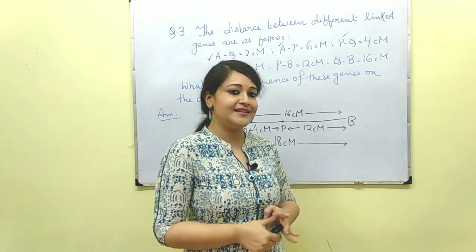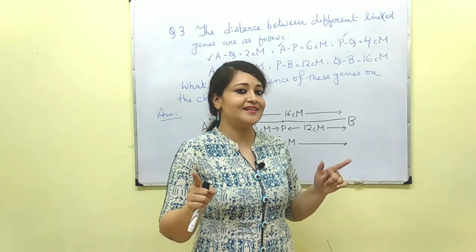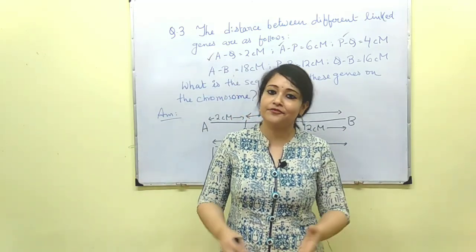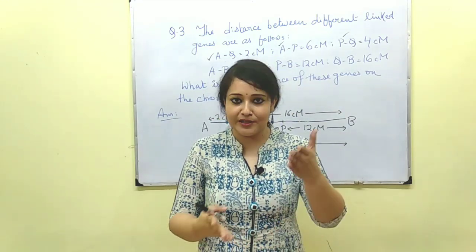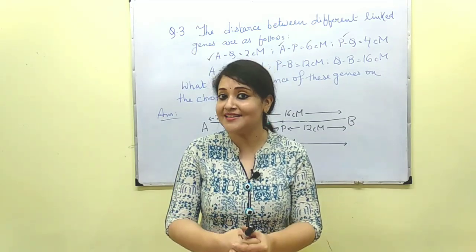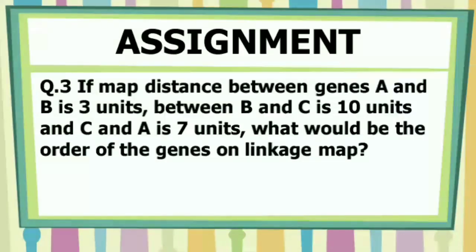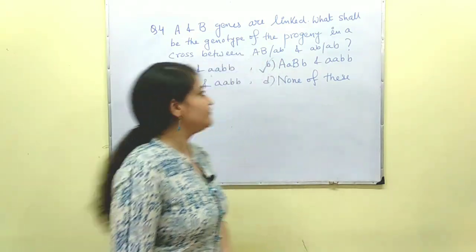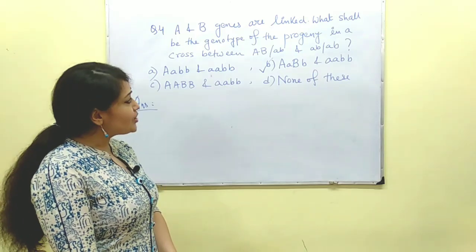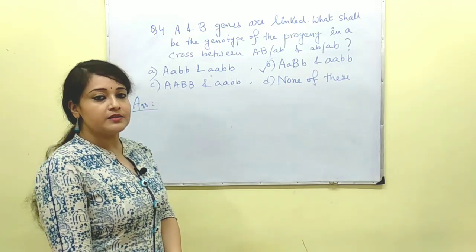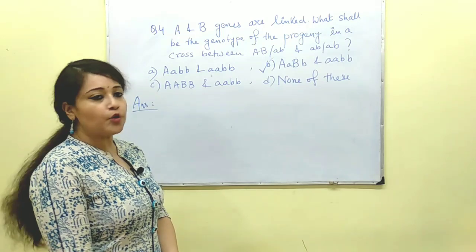Please remember this trick: the maximum distance genes are placed at opposite ends. By applying this simple trick you can easily solve this kind of question. Question number 3 of today's assignment is on your screen — please try to solve it and write the answer in the comment section. Now question number four: A and B genes are linked. What shall be the genotype of the progeny in a cross between AB/ab and ab/ab? Four options are given.